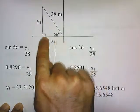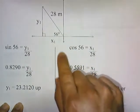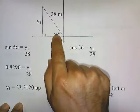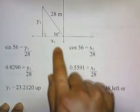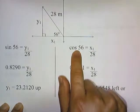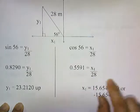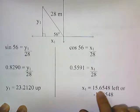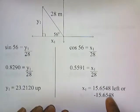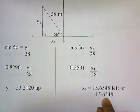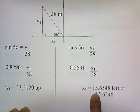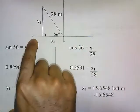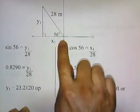To find the horizontal component x1, we use the cosine function: cosine of 56 equals x1 over 28. Cosine of 56 is 0.5591, so x1 equals 15.6548. But since the horizontal component points to the left, we write it as negative 15.6548. If your horizontal component points to the left, you make it negative. If it points to the right, you make it positive.